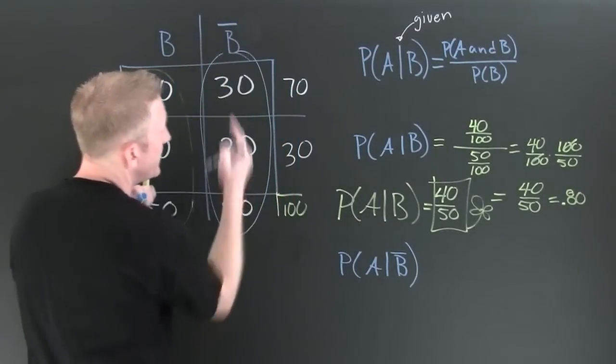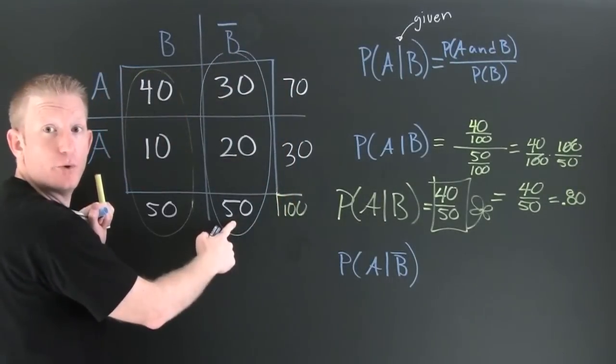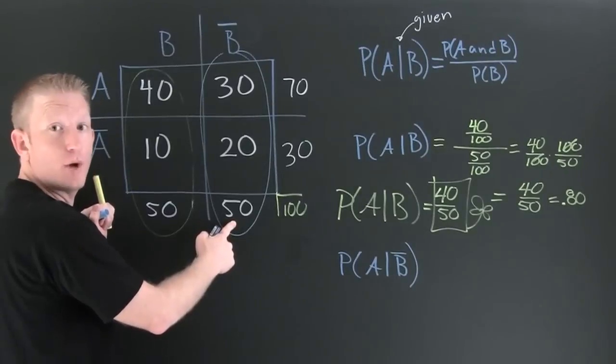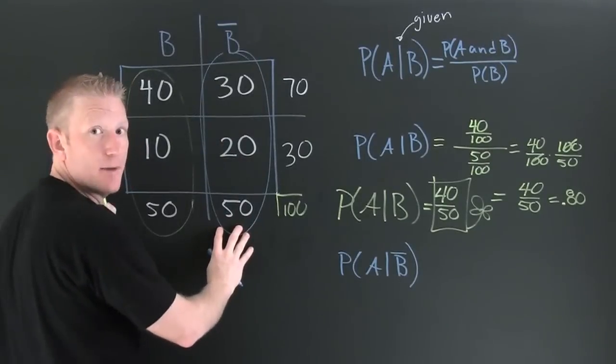Here we are. We're in not B. Now we're going to use this column in order to find that conditional probability. So not B has already happened.